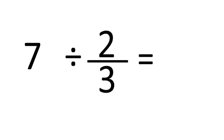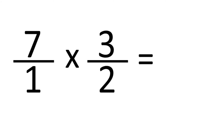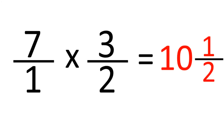As with multiplication, if a whole number is involved, remember that it can be rewritten as itself over 1. So take 7 divided by 2 thirds — this is really 7 over 1 divided by 2 thirds. We flip the 2 thirds and get 3 over 2, and change the division to a multiplication sign. 7 times 3 is 21, 1 times 2 is 2, the answer is 21 over 2, or 10 and a half.